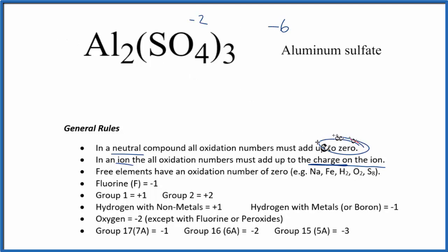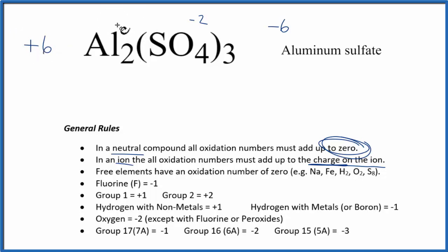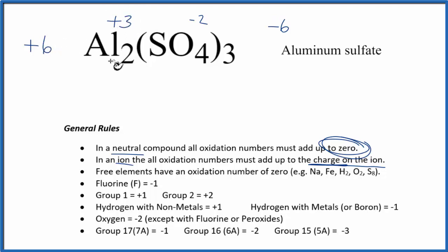For everything to add up to zero, the aluminum overall must contribute a charge of plus six. We have two aluminum atoms, so two times some number equals plus six. Two times plus three is plus six, so each aluminum atom has an oxidation number of plus three.